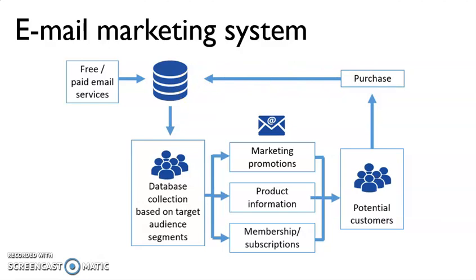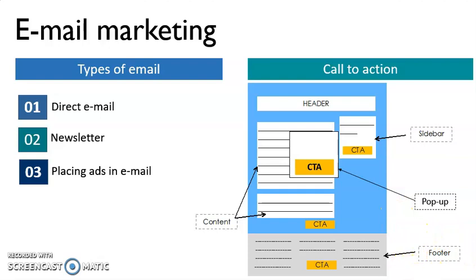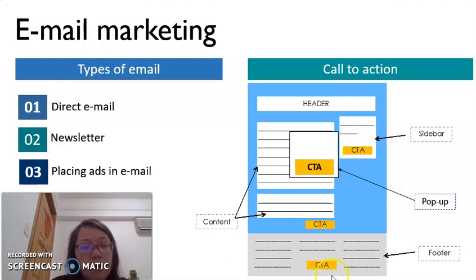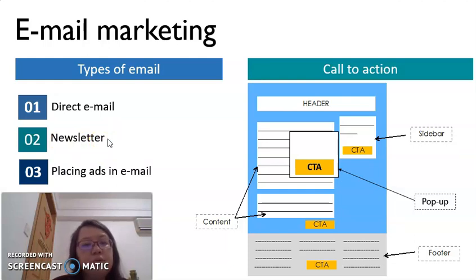In email marketing, there are a few different approaches. The first type is direct email — we directly email customers with a subject title, sidebar content, and other relevant information. Very importantly, we must include our personal or company information so that customers trust the product and know it is not a scam. The second approach is a newsletter, where we provide information about the product or something relevant to it.